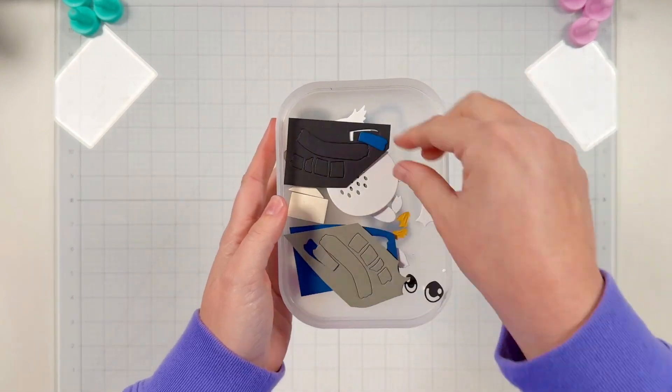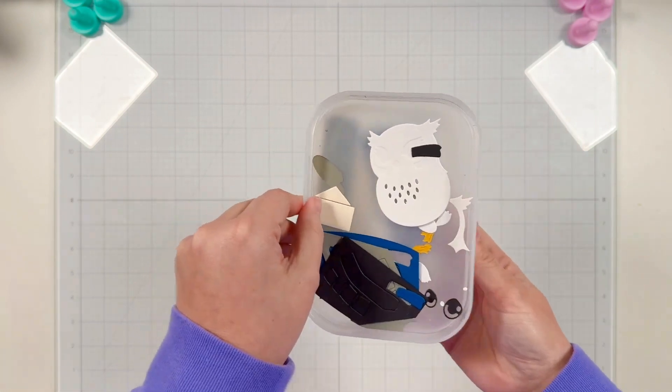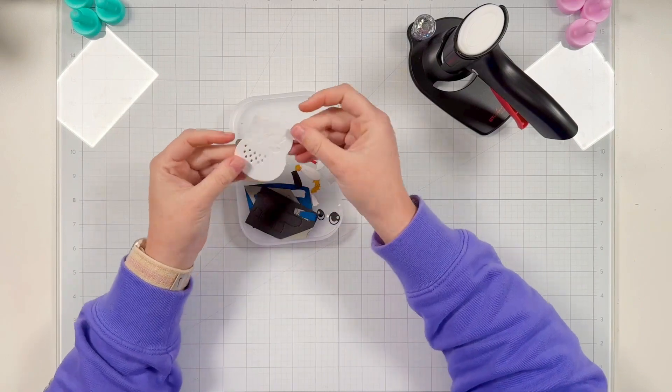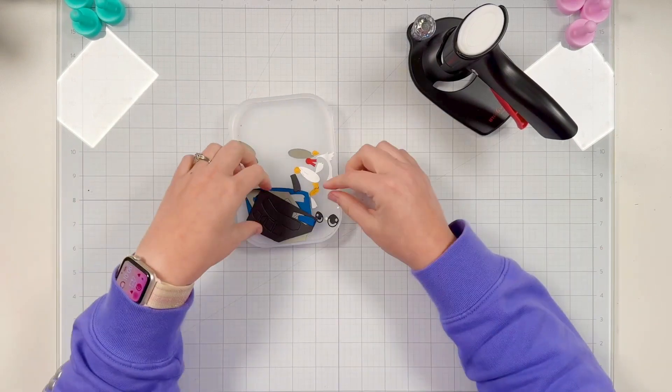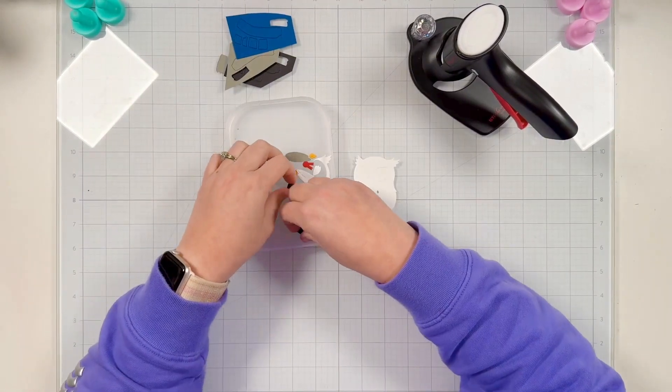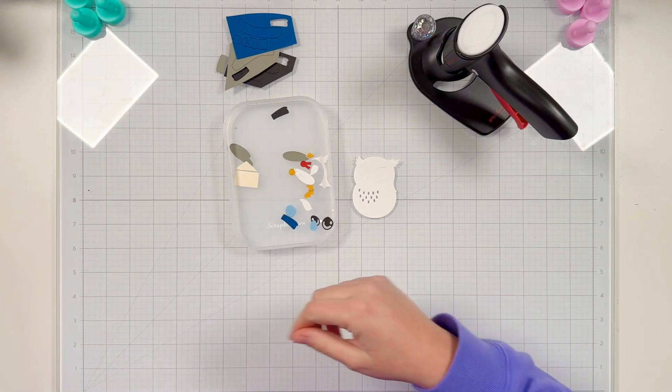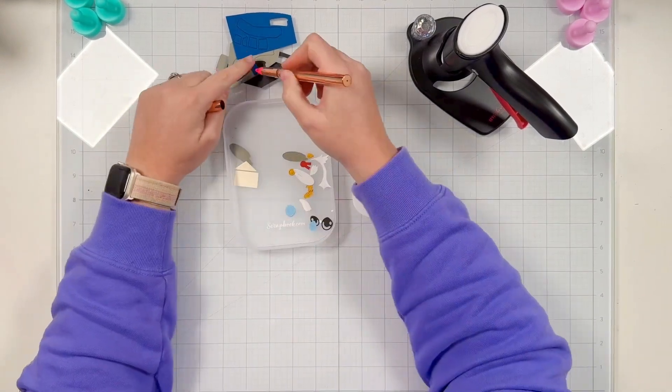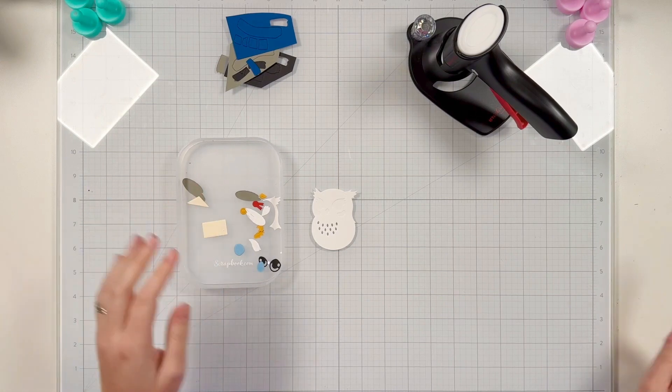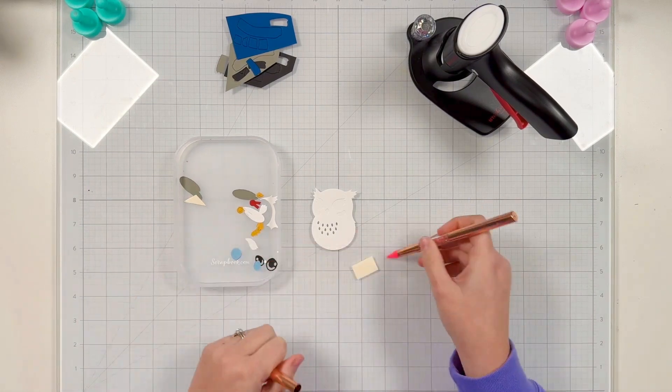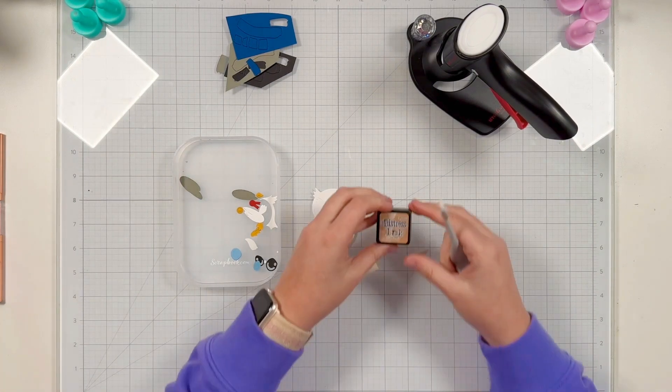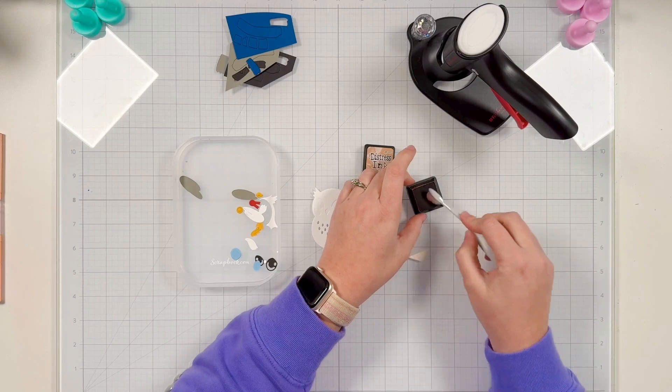So I've done lots of die cutting. I die cut my stitching die of the month as well as my small die of the month. So let's get to assembling. Since I'm so excited to be on the small die of the month team now, let's start with that one. I did lots of die cutting out of some black, gray, blue, white, and a little red, some gold, and some cream cardstock. I know that was a lot of colors.